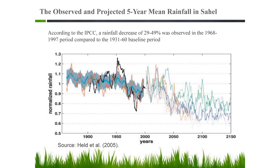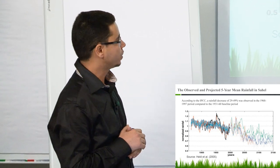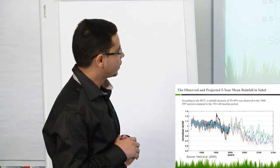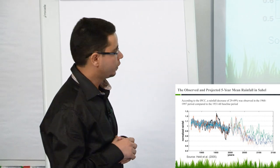About the future, the results are somewhat confusing — we cannot really say anything definitive about how the weather will be in the future for the Sahel. But a very interesting study by Held et al. in 2005 shows that, in addition to a lot of fluctuation in precipitation, the trend is going down. In the future, there will be less precipitation, which makes the situation much more complicated for the Sahel.